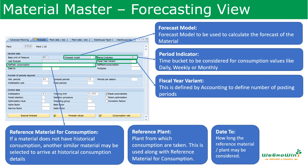If one material does not have any historical data to create the forecast, then we can define a material that is similar to that material as a reference material here — as a reference material for consumption details. The system will then consider that material for the past details to calculate the forecast for the material we are looking for. We can also enter here which is the reference plant we have to consider.